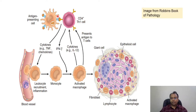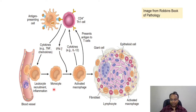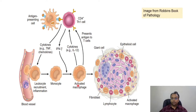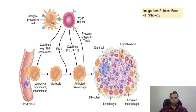Once this Th1 helper cell recognizes the antigen, they secrete cytokines like tumor necrosis factor and chemokines, which help in leukocyte and monocyte recruitment to the site of inflammation. Additionally, Th1 secretes interferon gamma — the most important substance — which activates the monocyte and macrophage. Once the macrophage is activated, they change their shape from a round cell to an elongated boot shape with a central indentation and lots of abundant eosinophilic cytoplasm. It looks like epithelium, so they are given the name epithelioid cell.